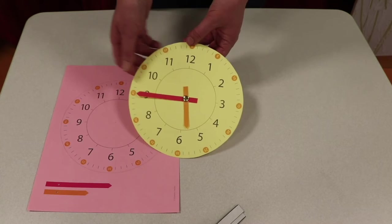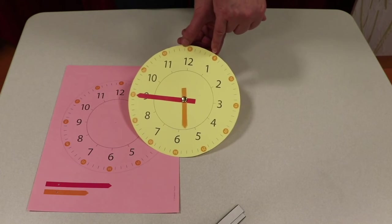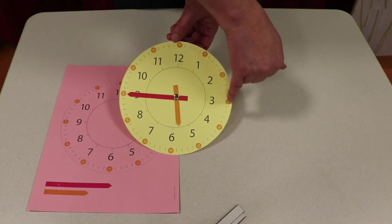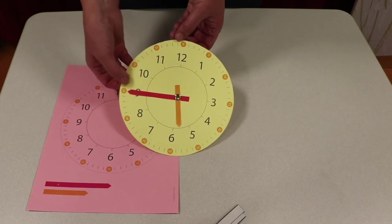Now what's nice about this clock face, it's different than the ones we've used in the past. It actually indicates 5 minutes after the hour, 10 minutes, 15, 20, 25, 30, 35, 40, 45.